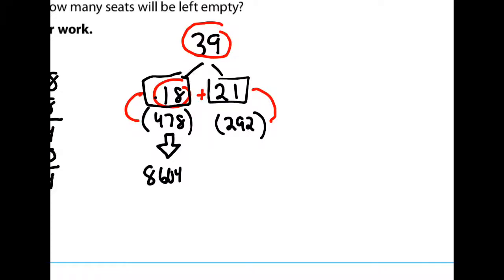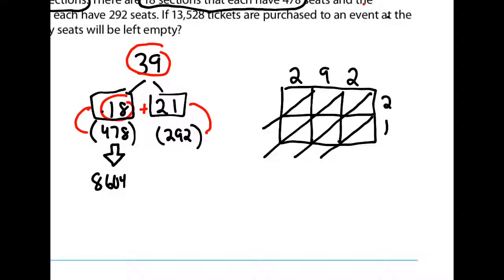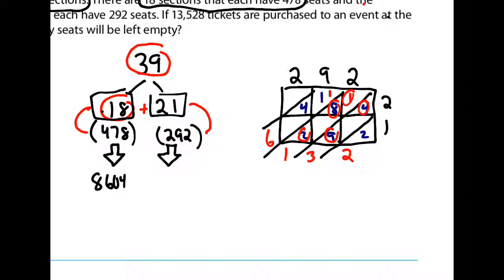For the other part I'll do 21 times 292 using lattice. Two times two is 4, two times nine is 18, two times two is 4. For one times two, instead of writing 02, just write 2 and leave the zero spot blank. One times nine is 9, one times two is 2. Adding up the lattice: 2, then 9 and 4 is 13, then 8 and 2 makes 10 plus 1 is 11, then 4, 5, 6. Those 21 sections with 292 seats each give me 6,132 seats.